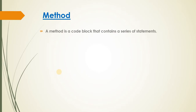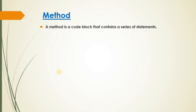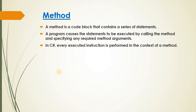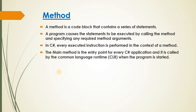What is a method? A method is a code block that contains a series of statements. A program causes those statements to be executed by calling the method and specifying any required arguments. In C-Sharp, every executed instruction is performed in the context of a method. The main method is the entry point of every C-Sharp application and is called by the Common Language Runtime when the program starts.